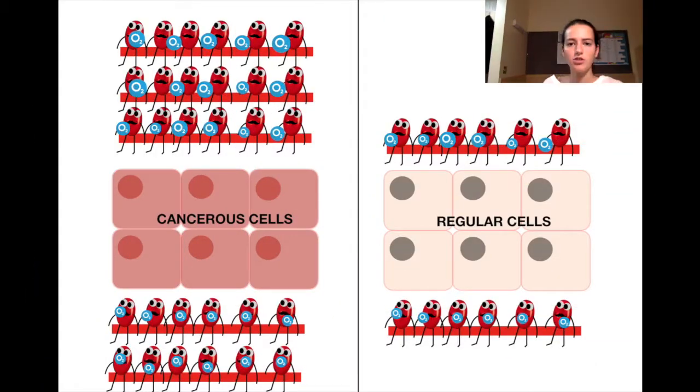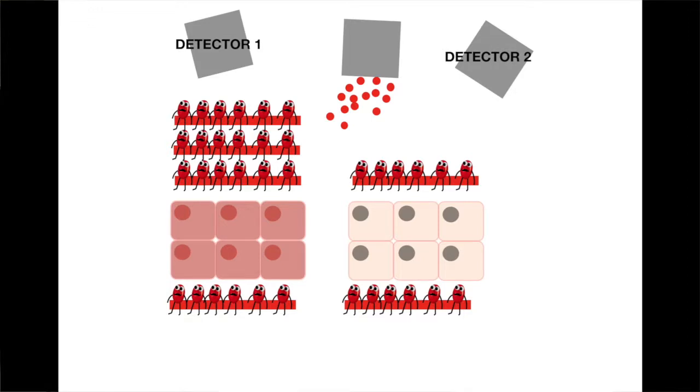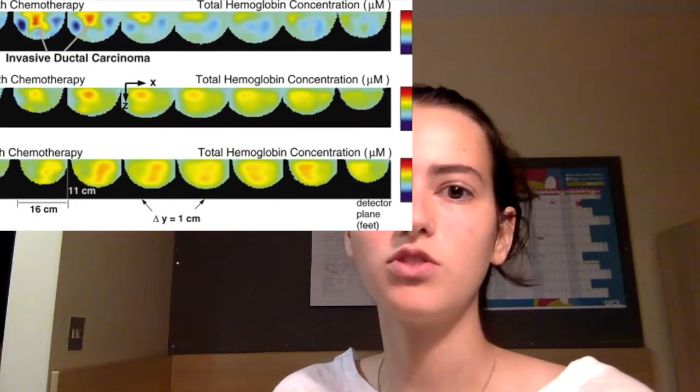One of the applications of DOI is to detect breast cancer. Cancer cells have a larger network of blood supply because they require more oxygen and glucose. This means there will be more hemoglobin in areas where cancer cells are located. Since hemoglobin is a good absorber of infrared light, more infrared light will be absorbed in those areas, and the detected intensity will be smaller compared to areas where blood supply is normal. By using these differences in detected intensities, the computer converts the numbers into an image so we can see exactly where the cancer cells are located.